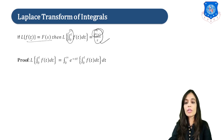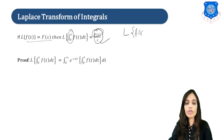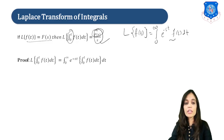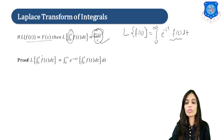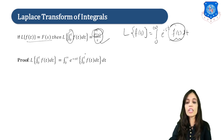Let us start with the proof. We all know the definition: Laplace of f(t) is the integral from 0 to infinity of e raised to minus st times f(t) dt. Here our f(t) is the integral from 0 to t of f(t) dt, so in place of this we will put that integral.